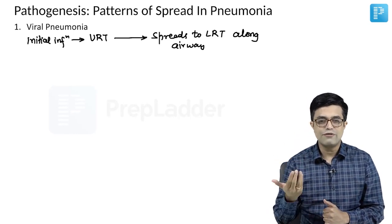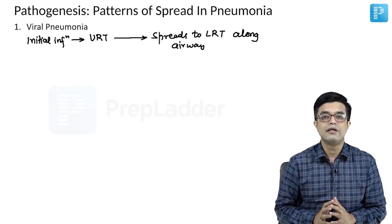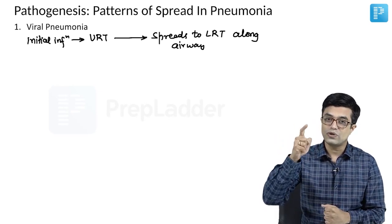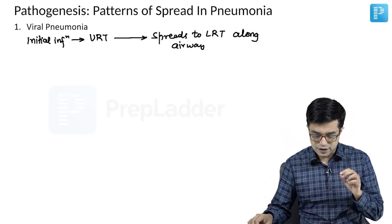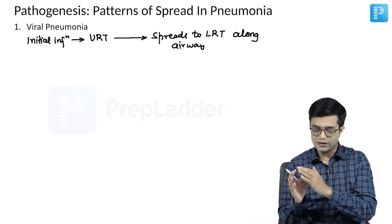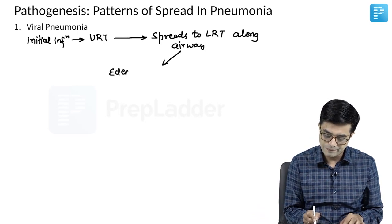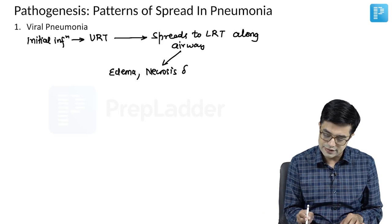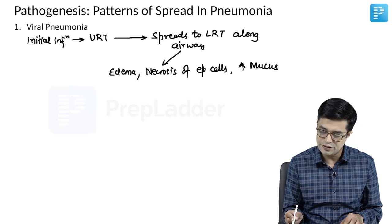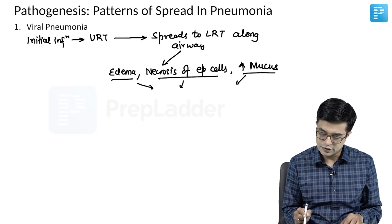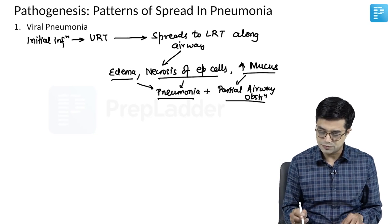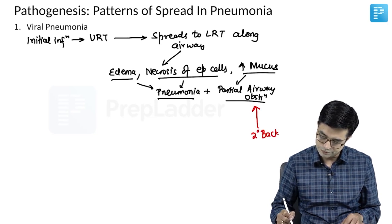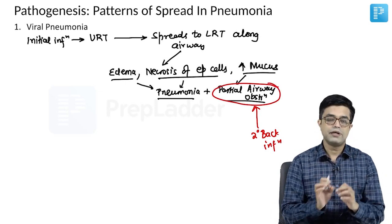Many times, the body's own defenses are able to clear this and the child does not develop pneumonia, or it is a self-limited pneumonia. Other times, there will be bacterial superinfection — for example with Staph aureus — causing rapidly fulminant pneumonia. So in viral pneumonia, spread is from upper to lower respiratory tract along the airway, causing airway edema, necrosis of epithelial cells, and increased mucus production, leading to partial airway obstruction and risk of secondary bacterial infection.